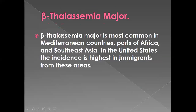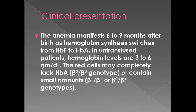Beta thalassemia major is most common in Mediterranean countries and Southeast Asia. Clinically, anemia manifests 6 to 9 months after birth as hemoglobin synthesis switches from hemoglobin F to hemoglobin A. During fetal life, hemoglobin F is responsible for supplying oxygen and other nutritional elements to the fetus.